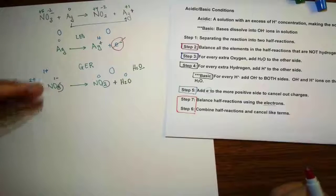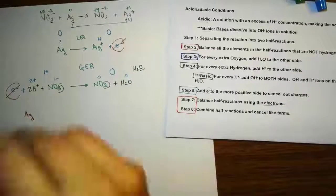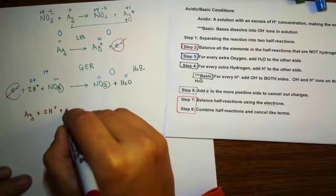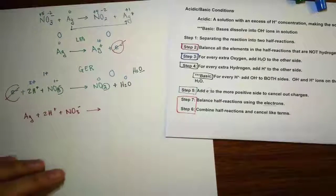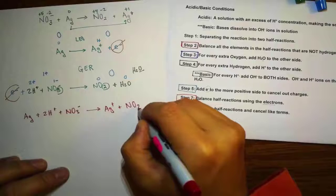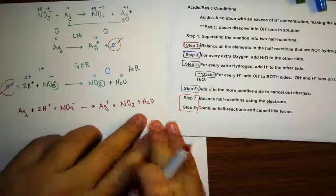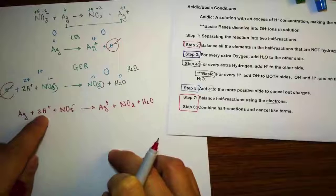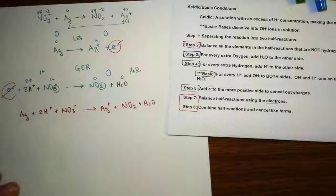Writing out the combined equation starting from the top: Ag on the reactant side, then from the bottom half-reaction: 2 H⁺ and NO₃⁻. On the product side: Ag⁺, NO₂, and H₂O. Do we have any like terms to cancel? We have no water on the reactant side, so nothing cancels there. Let's verify: 1 Ag each side, 2 hydrogen each side, 1 N each side, and 3 oxygen each side (2 + 1 = 3). It is balanced.